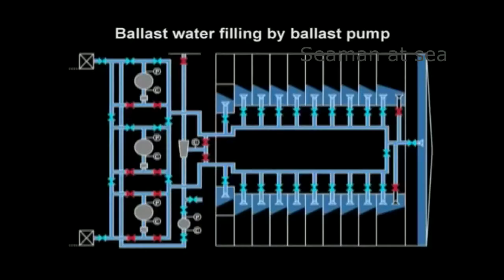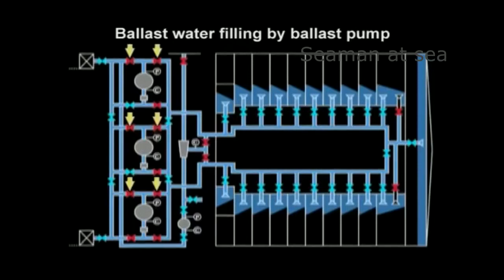After ballast filling by gravity is over, let's proceed to filling by means of ballast pump. Before starting the ballast pump, completely close the discharge valve. Centrifugal pumps are commonly used as ballast pumps. Start the pump with its discharge valve fully closed to avoid an overload at the start of the pump and to minimize surge pressure.